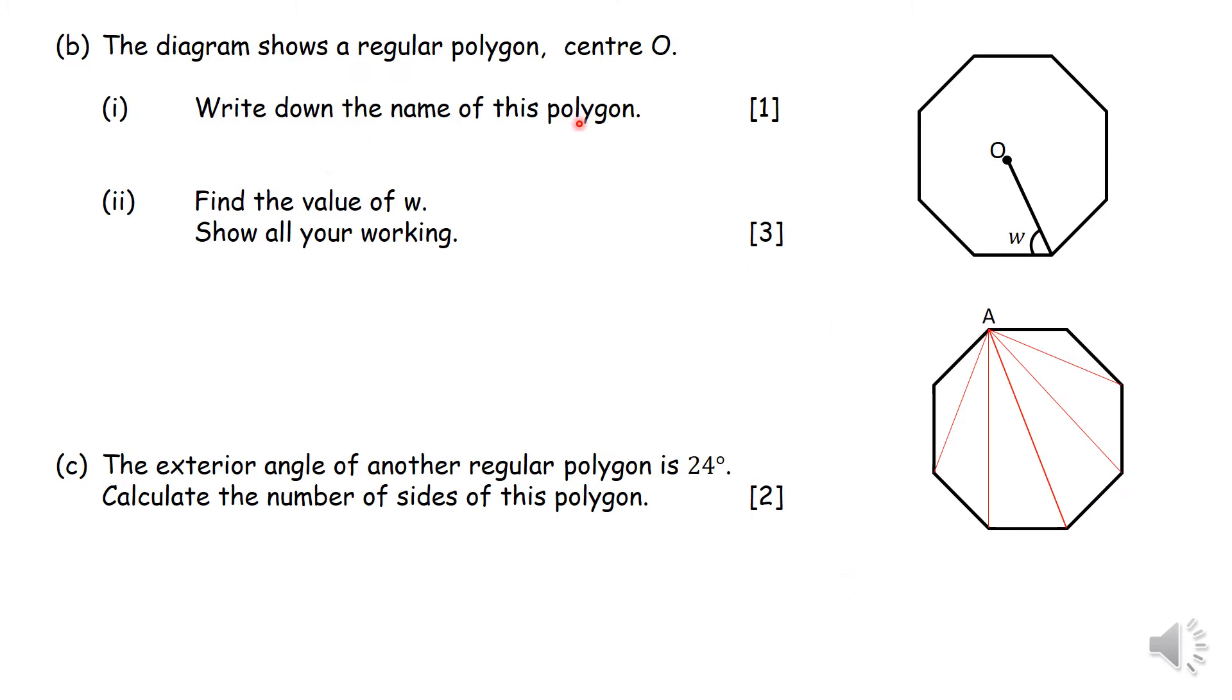The question continues. Now we have a regular polygon. Regular here in this case means all the sides are equal, all the angles are equal. Center O. So the center is somewhere there. And then the name of this polygon, well, it has eight sides. Therefore, a regular eight-sided polygon is called a regular octagon.